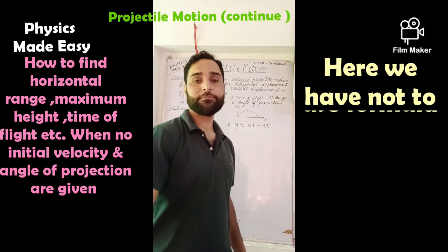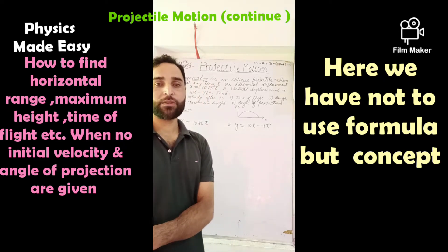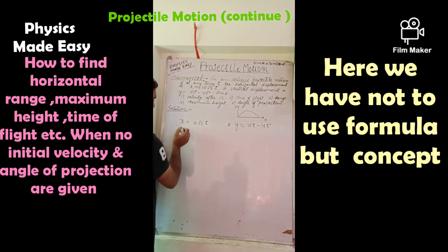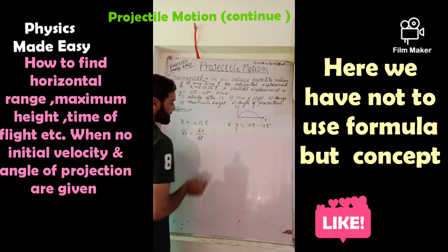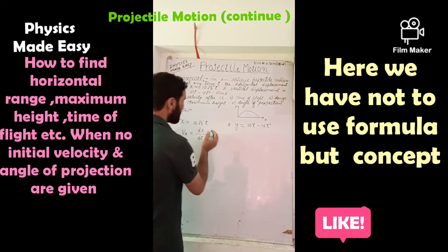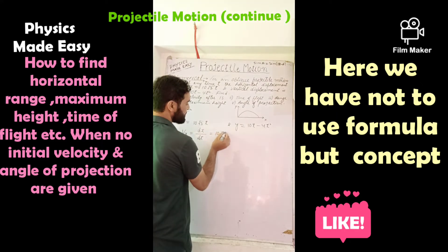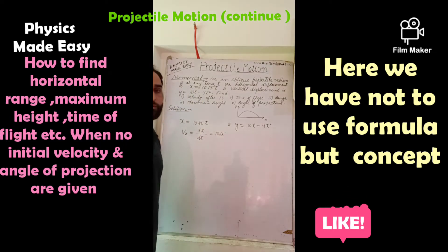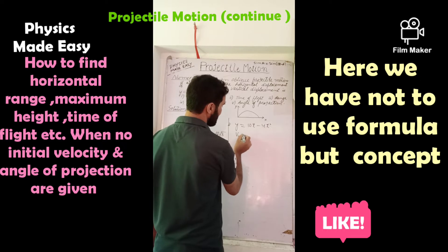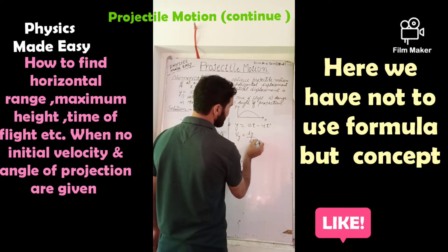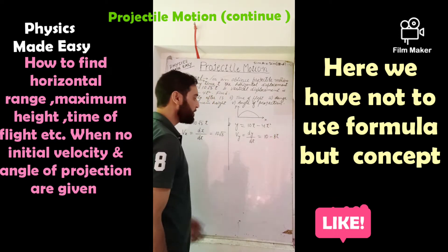We know that instantaneous velocity is the rate of change of displacement. The horizontal velocity vx will be dx/dt, which is the time derivative of x. That equals 10√3, since the derivative of 10√3·t with respect to t is just 10√3. The vertical velocity vy will be dy/dt, which equals 10 - 8t.